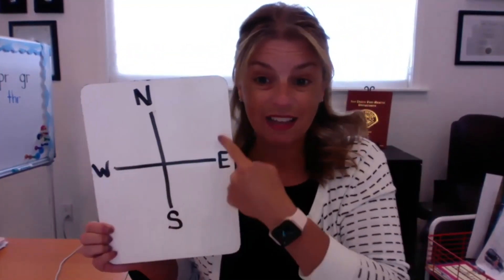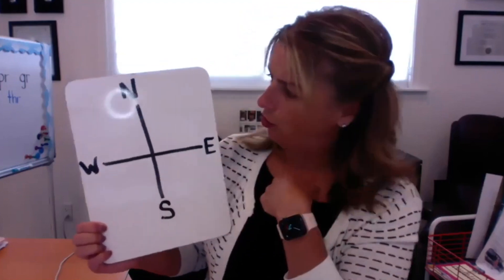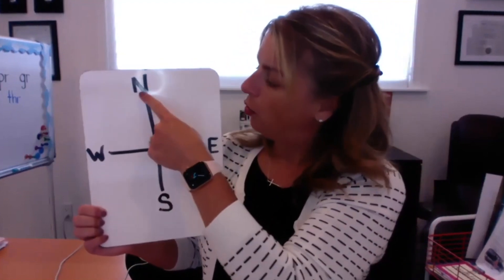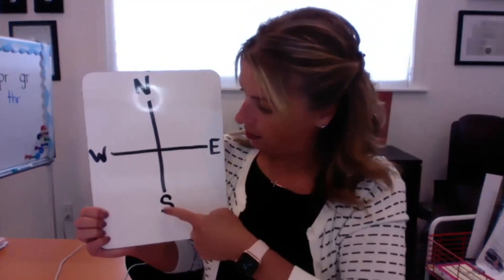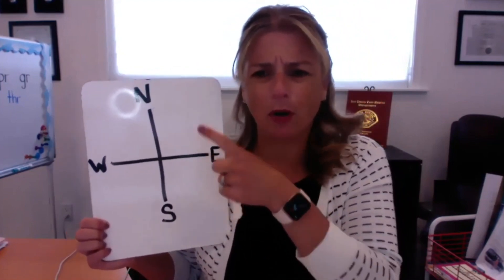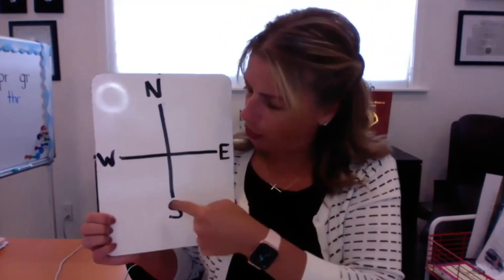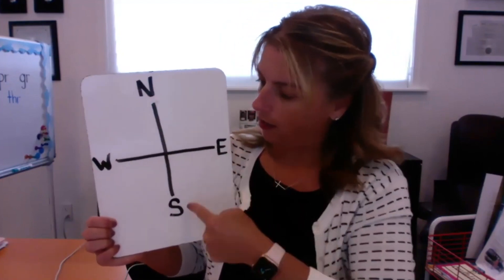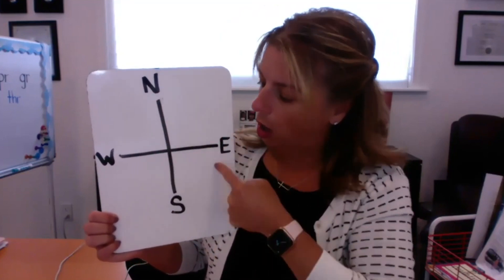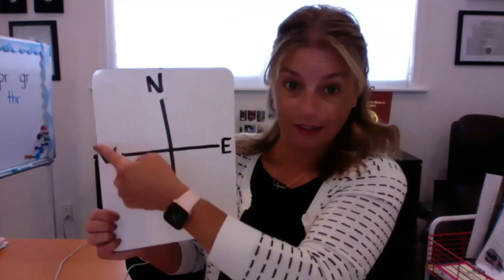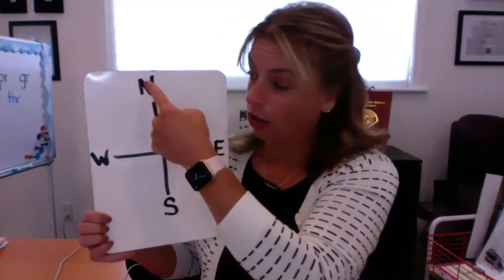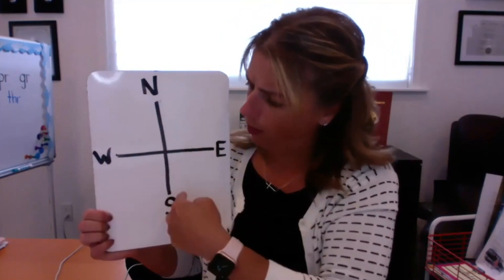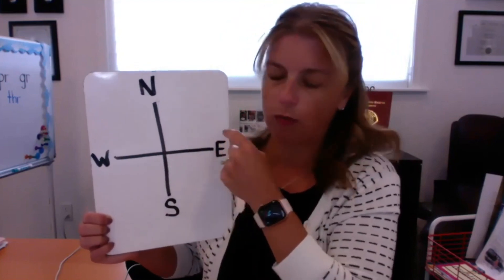So this is a compass rose, and it always is north, east, south, and west. Now, how do I remember what goes first, second, third, and fourth? We go north, east, south, west — we go clockwise. Just like the hands on the clock move this way — it doesn't move this way, it moves this way.